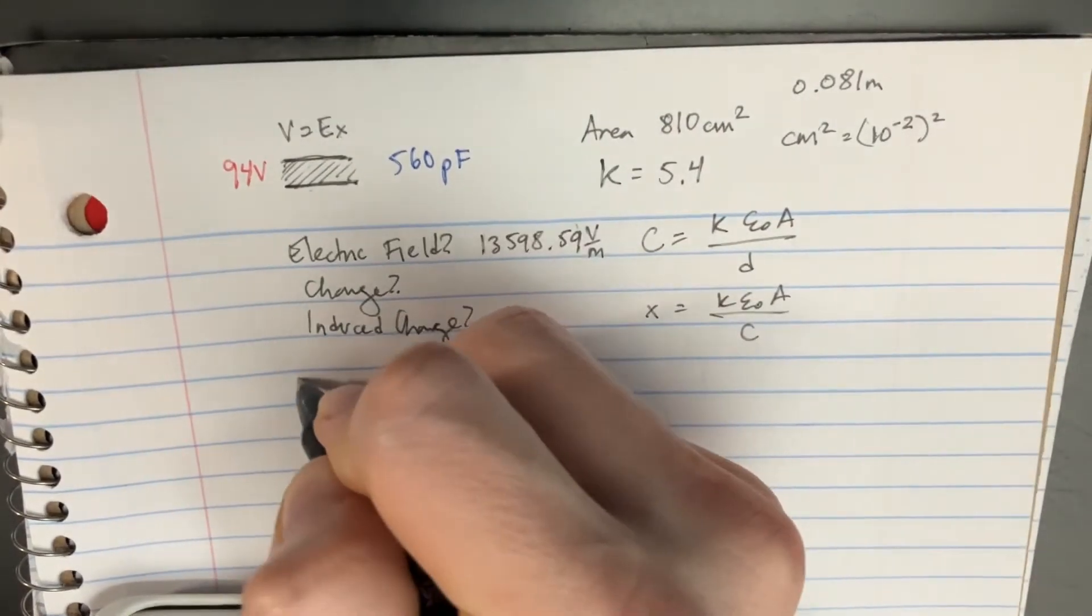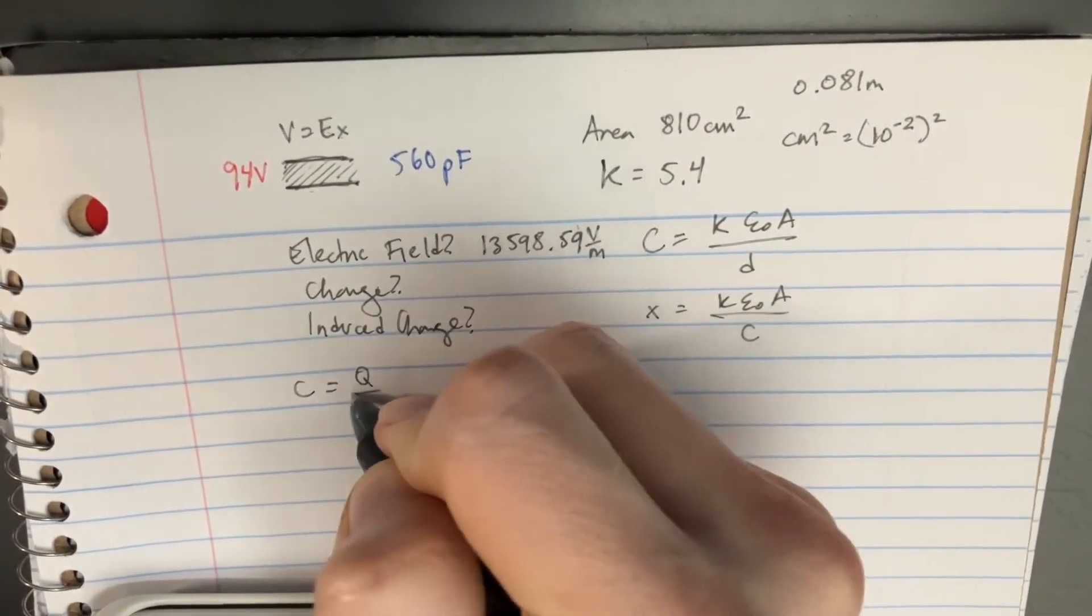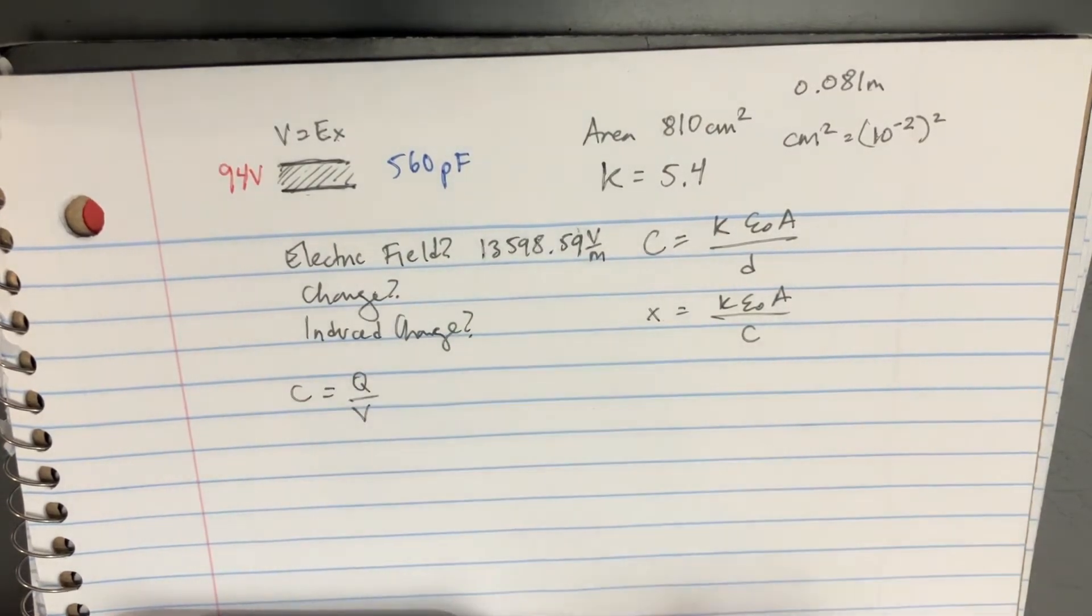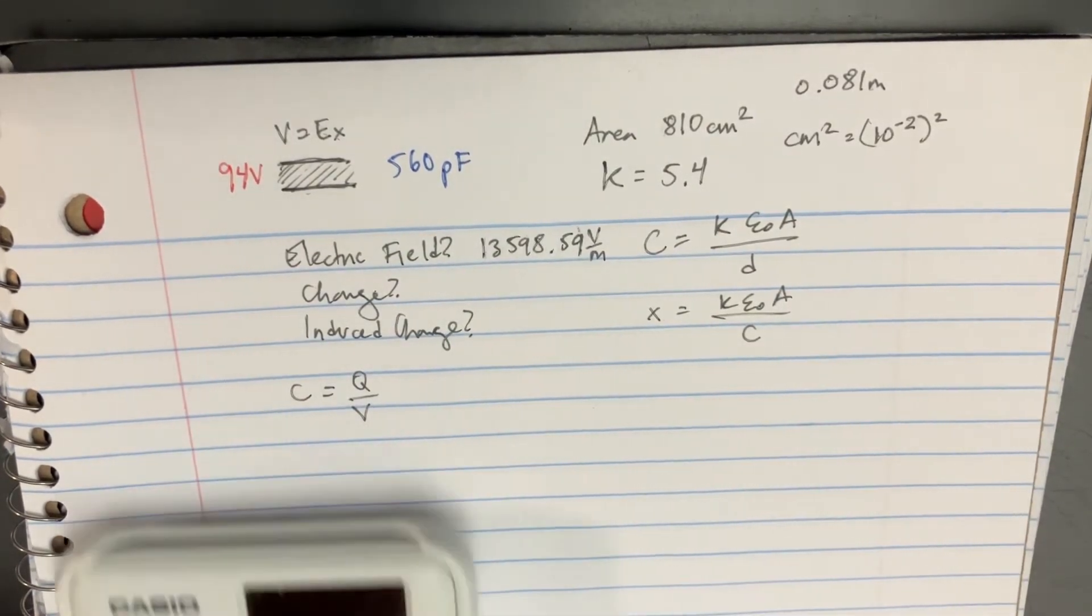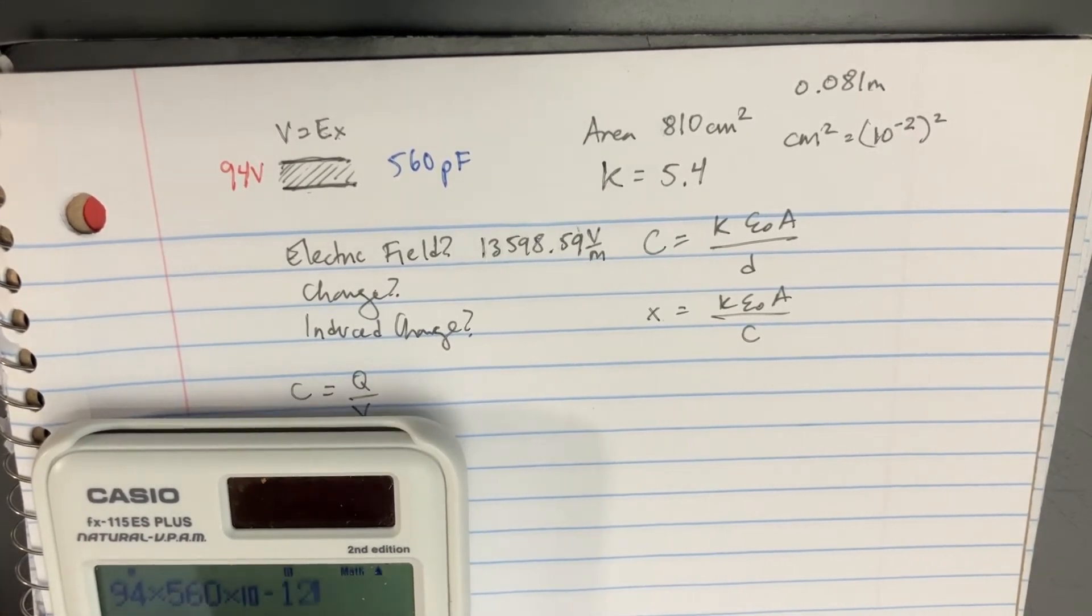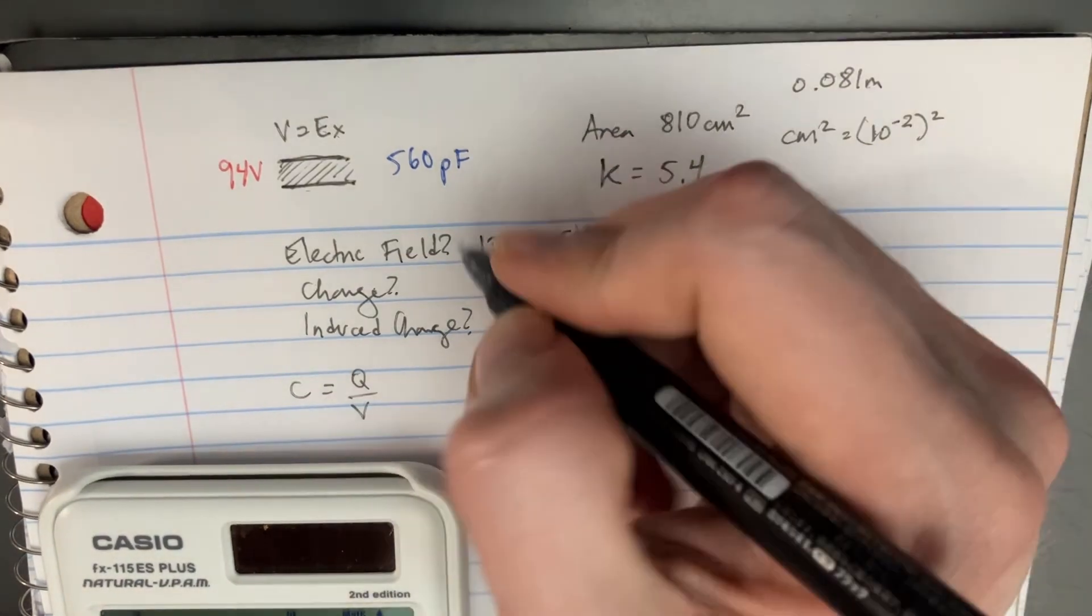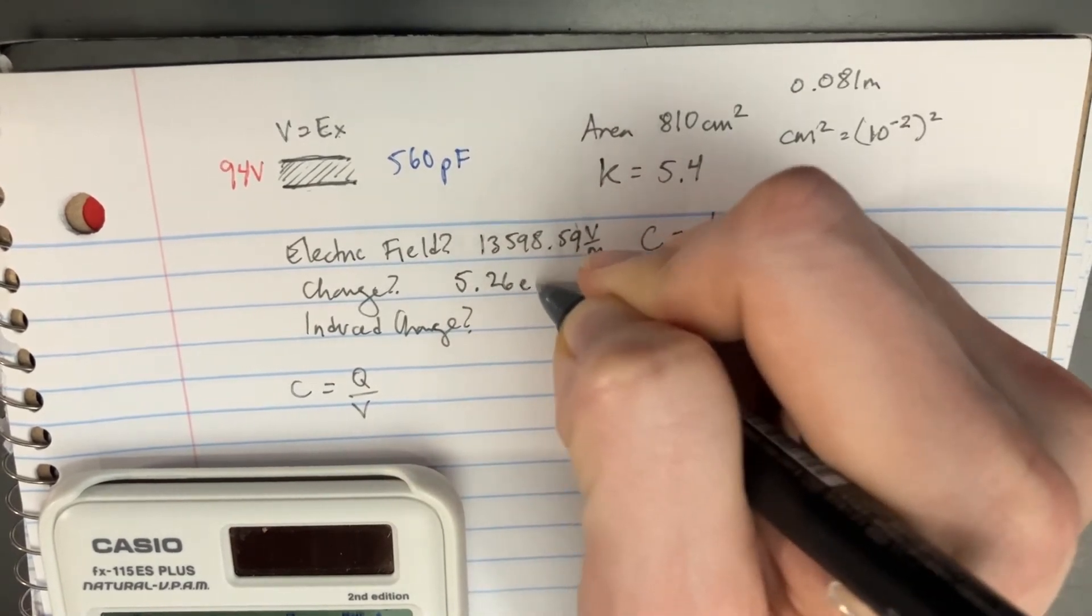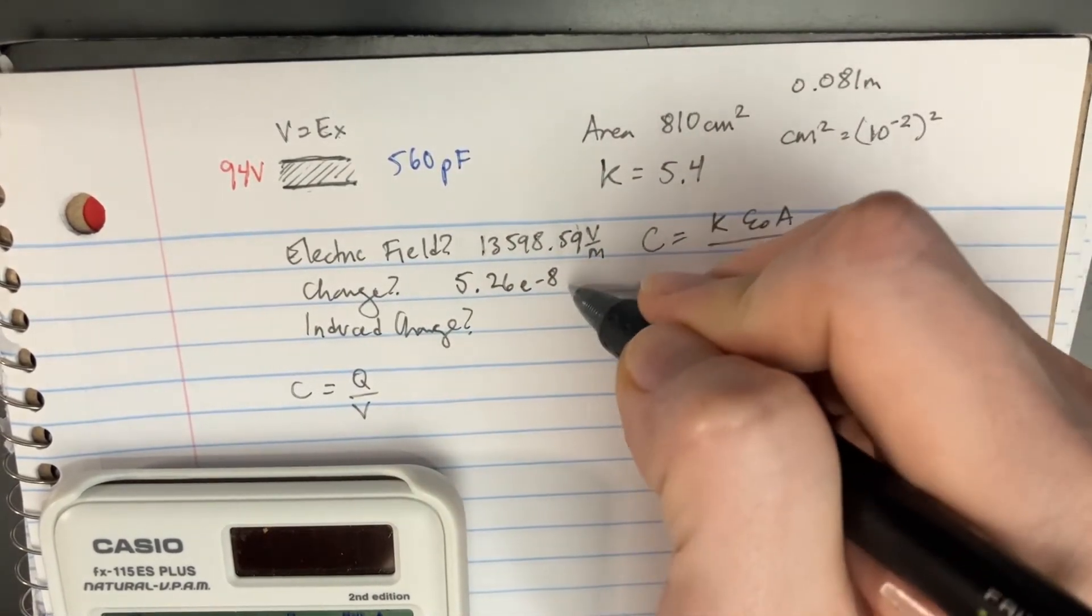For the charge, we can use the equation C equals Q over V, so we can multiply V times C. That's 94 times 560 times 10 to the negative 12, giving us a charge of 5.26 times 10 to the negative 8.